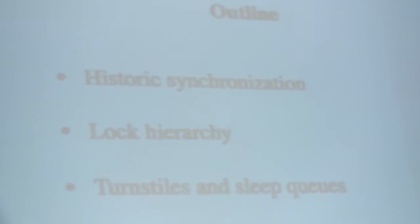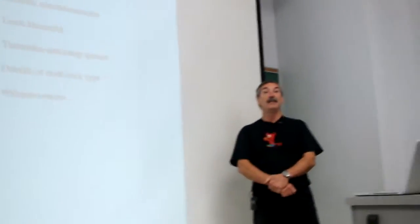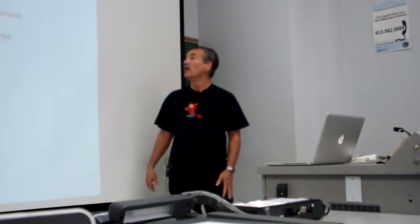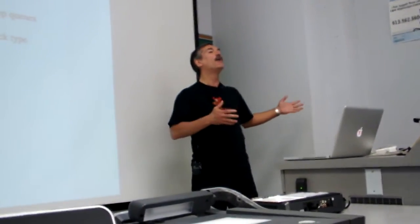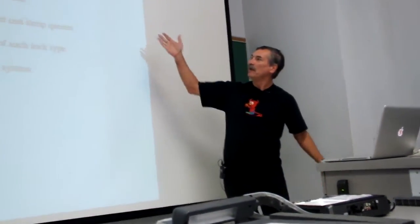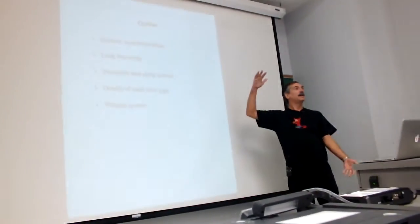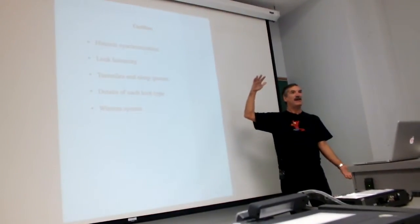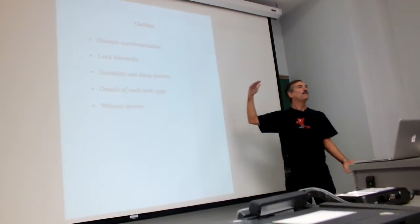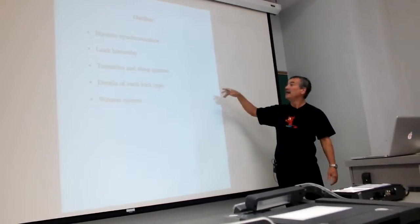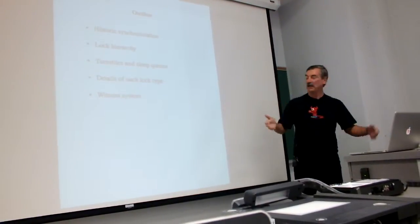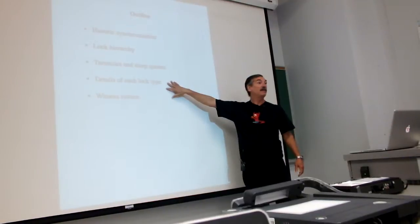So what are we going to do? I'll do a walk-through of the way we historically used to do synchronization — back in the days of the non-SMP kernel — just to show how far we've come. I'll then talk about the lock hierarchy, that list of all the different ones, so I'll have all the different kinds of locks on one page, which I'll then spend most of my time talking about in detail.